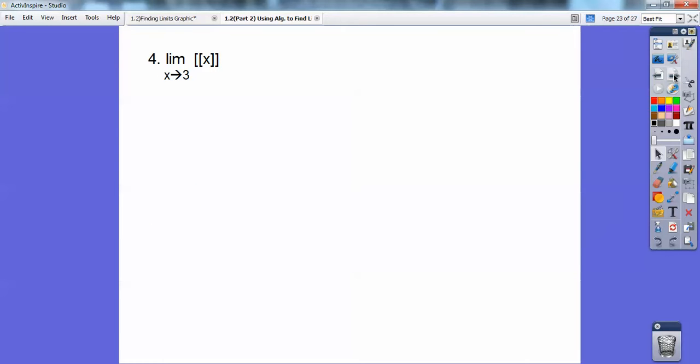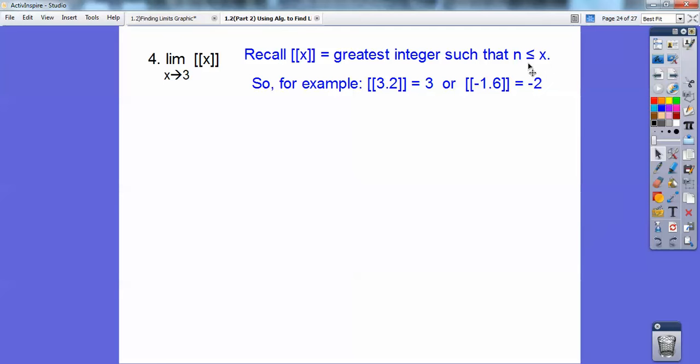All right, so greatest integer function. Do you guys remember greatest integer function? So as I approach 3 from the left and 3 from the right. Recall the greatest integer is any number n that's less than or equal to x, if x is my greatest integer. For example, the greatest integer that's less than or equal to 3.2 is 3. The greatest integer that's less than or equal to negative 1.6 is negative 2.